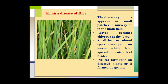Khera disease of rice: in rice, the deficiency of zinc causes a disease named Khera disease. The symptoms appear in small patches in the nursery or in the main field. Leaves become chlorotic at the base, and small bronze-colored spots develop on the leaves, which later spread over the entire leaf. In severe zinc deficiency, no ear formation occurs on the diseased plant, or if ear formation does occur, no grains are formed.